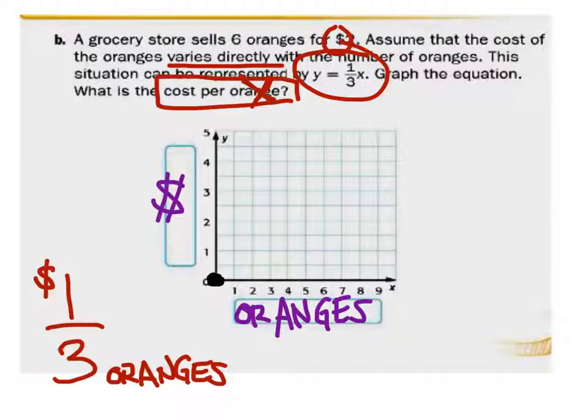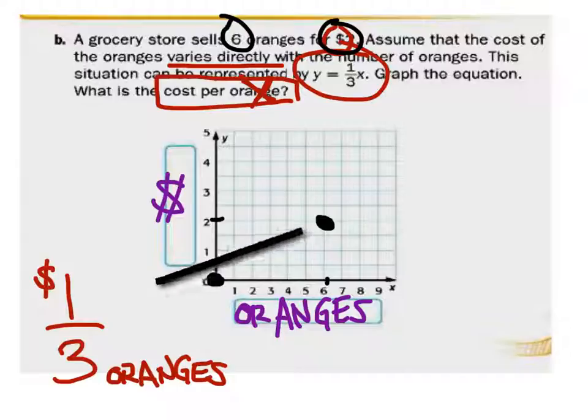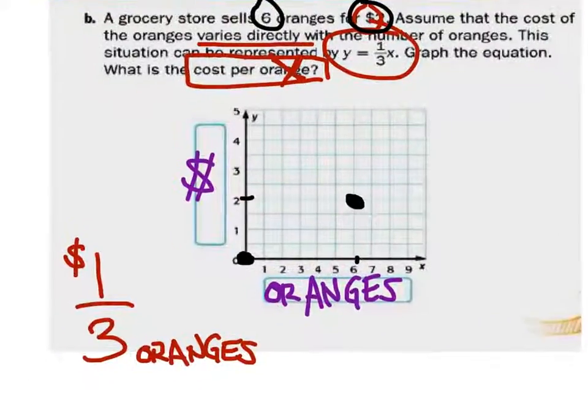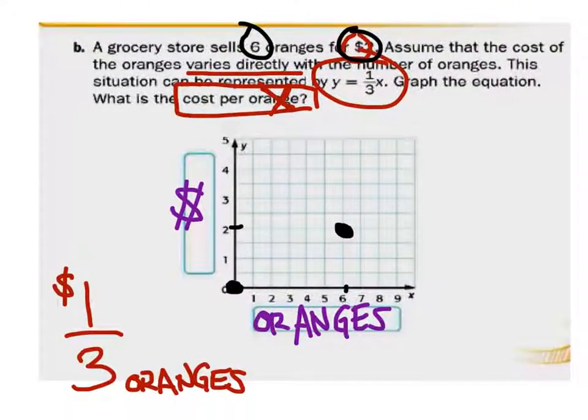And then it told us that for six oranges, I can pay two bucks. So, here's six oranges. Here's two bucks. So, I got another point right up in here. All I've got to do now is draw a line through two points. Nope, that didn't work. No, I'm just going to draw it.